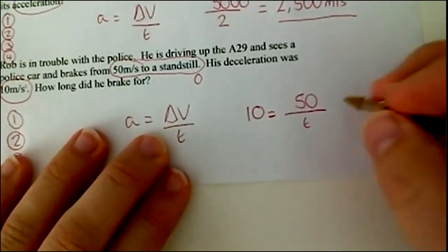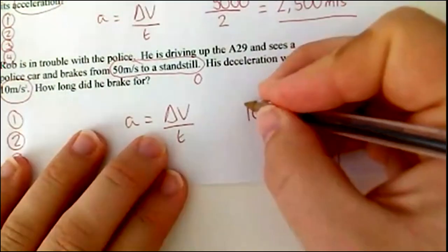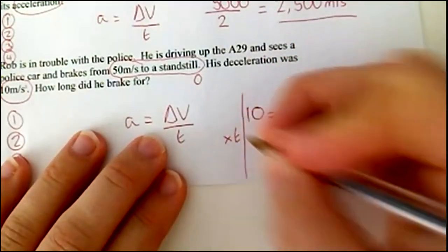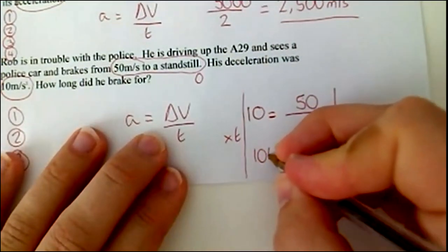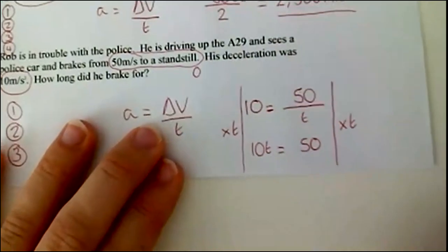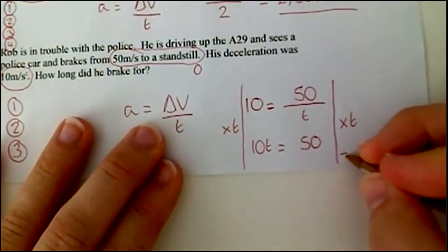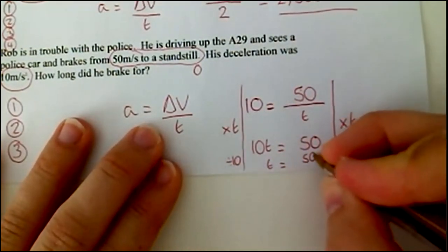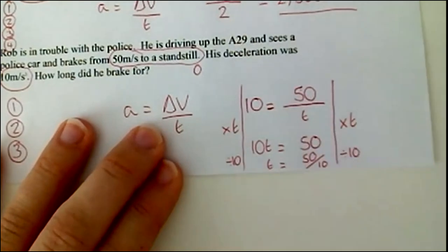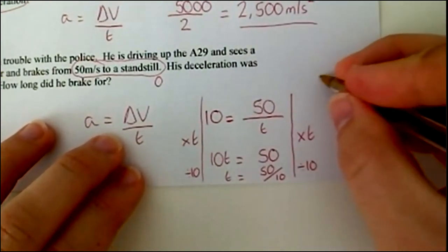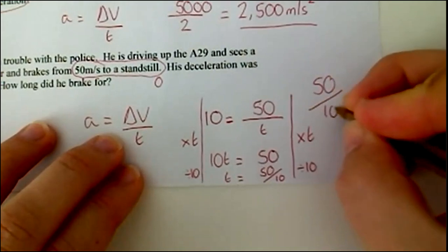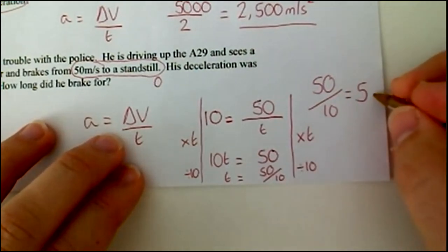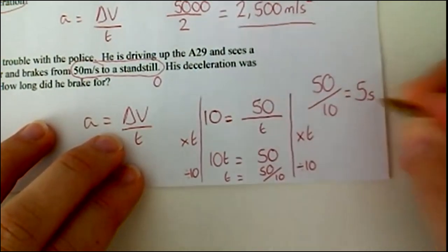So we now need to rearrange your equation to make t the subject. So again, doing the math, times both sides by t, which now means you've got 10 t equals 50. I'm going to divide now both sides by 10 to get t on its own, so that means t equals 50 divided by 10. So we need to do 50 divided by 10. That gives you an answer of five and because we're working with time it must be five seconds.